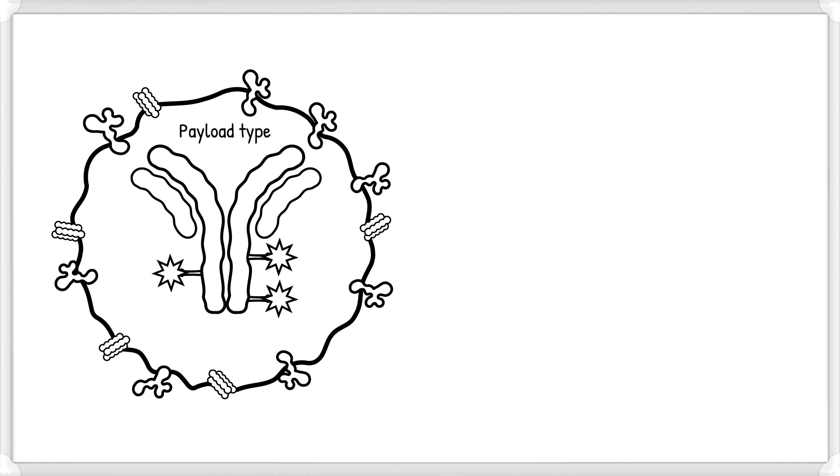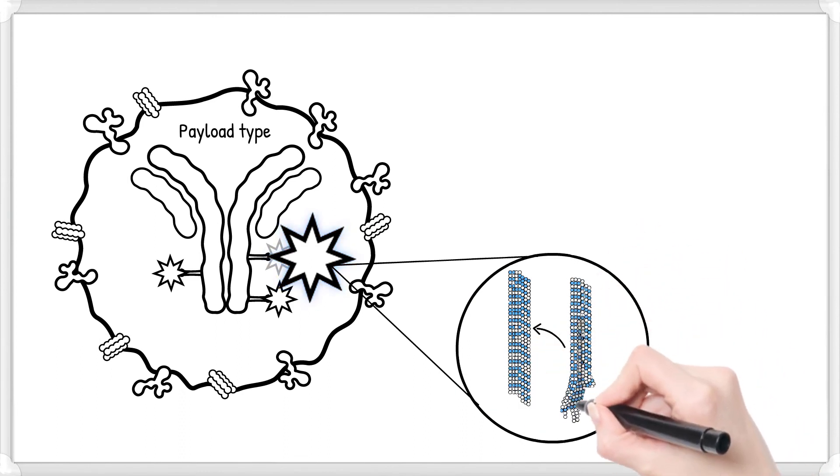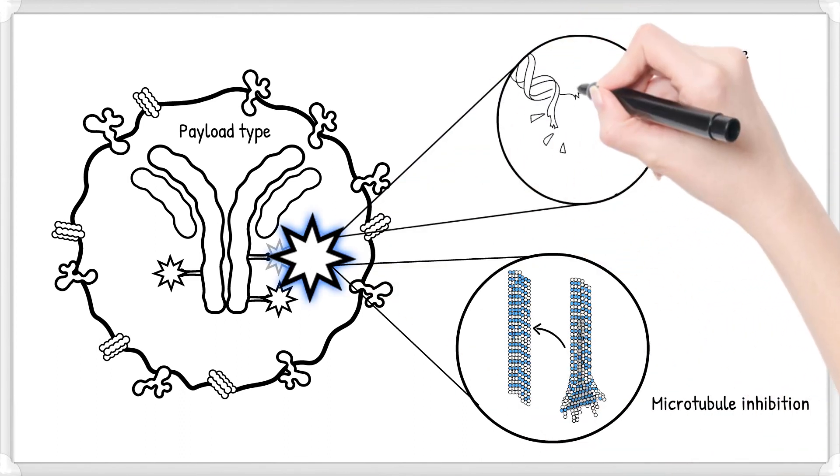Cytotoxic agents can have varying potencies and mechanisms of action that influence ADC efficacy. The two major types are microtubule inhibitors and DNA-damaging agents.